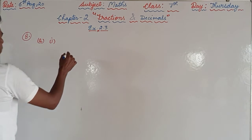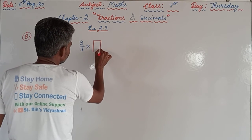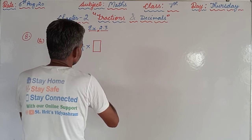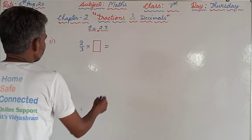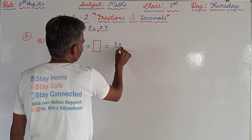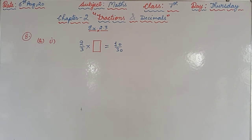In question number eight, it is given that two upon three multiplied by a box equals ten upon thirty. We need to find which fraction goes in the box in the first part, and in the second part we reduce that fraction to its lowest or simplest form.